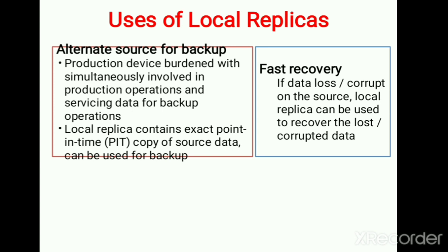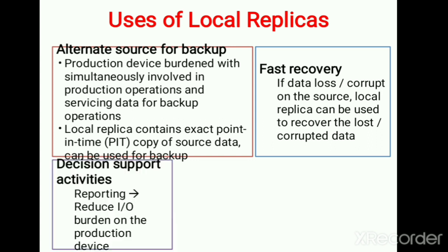The second use is faster recovery. If the data is corrupted, you need to get it back before it has been compromised. You can recover the data and restart operations from the time you had stopped. For example, if you are placing an order and there is a sudden power loss, when you restart the system you need to recover from where you had stopped — that is how the replica is used.